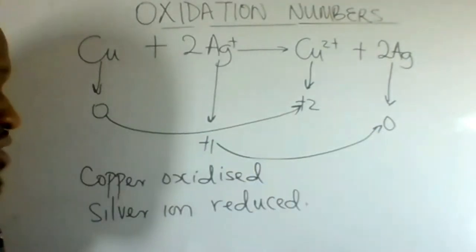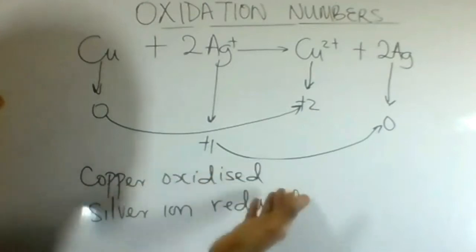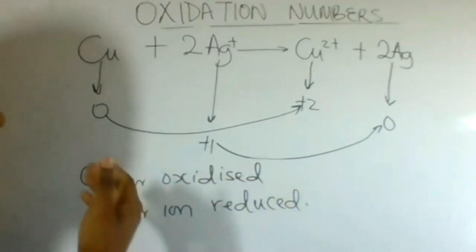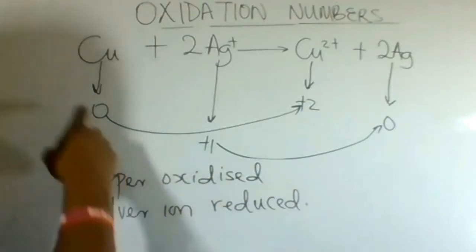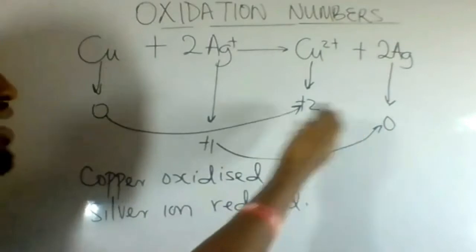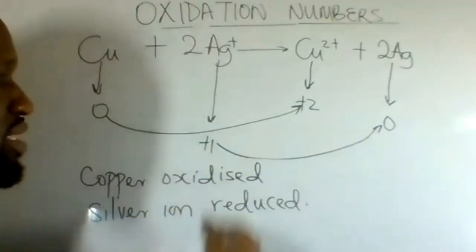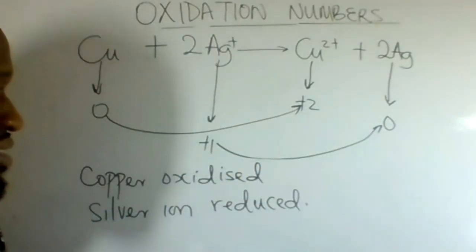We can therefore say that copper metal was oxidized while silver ion was reduced. Copper increased in charge, so it was oxidized. Silver ion decreased in charge, so it was reduced.